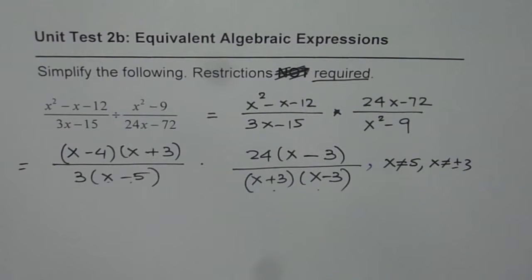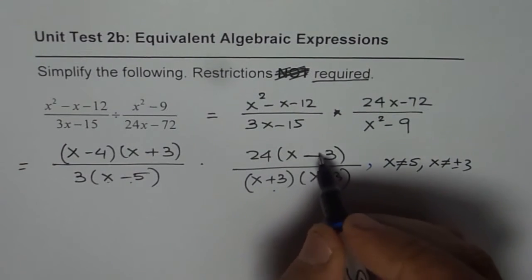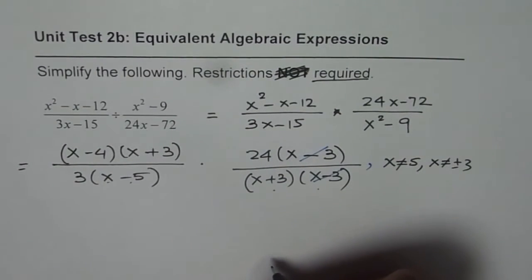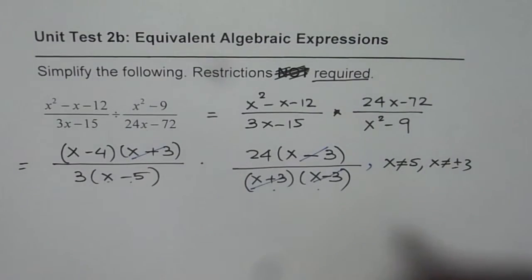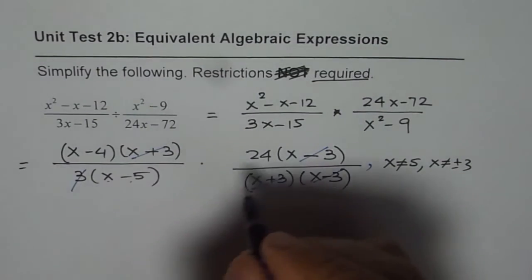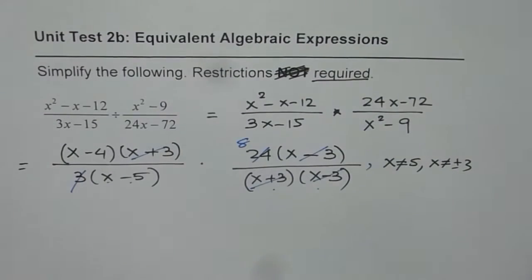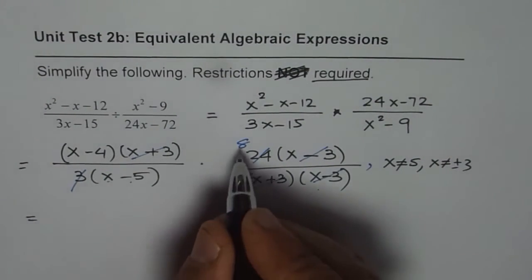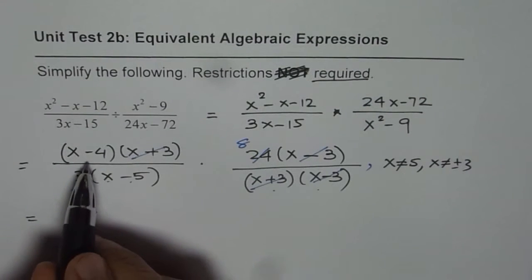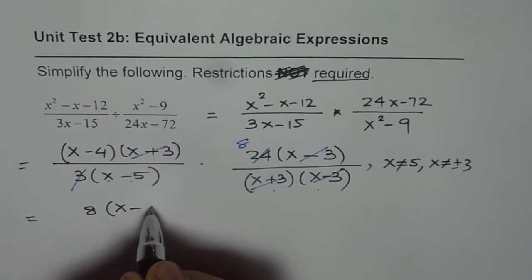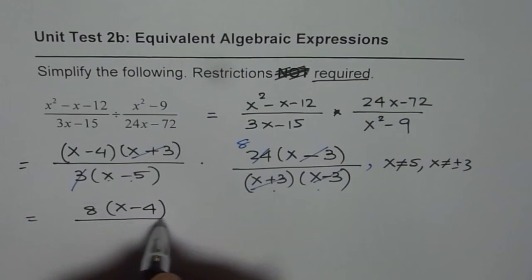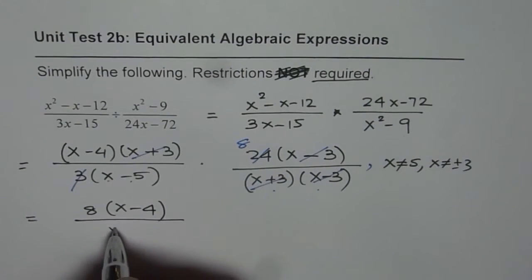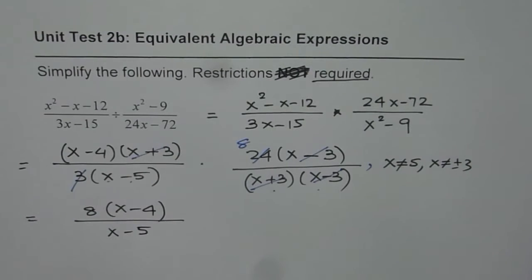Now, let us simplify. When you simplify, you can strike out common factors from numerator and denominator. That goes, and we are left with 3 will go 8 times in 24. So, now we can write down simplified expression, which is 8 as far as the number goes. Amongst the factors in numerator, we have x minus 4. In the denominator, we have one factor, x minus 5. So, that is the answer.